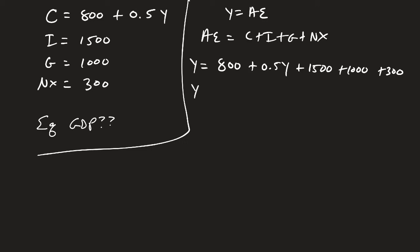We're going to combine the 800, the 1500, the 1000 and the 300. We're going to plug that into our calculator. And we'll get 3600 equals 0.5Y.